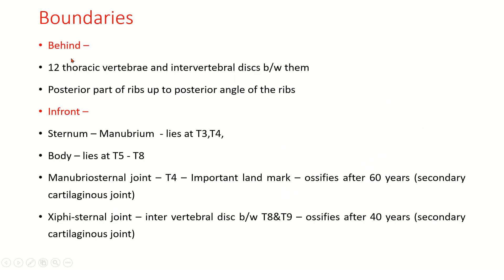The thorax is bounded behind by 12 thoracic vertebrae and intervertebral discs, and also by the posterior parts of the ribs up to their posterior angle. In front it is the sternum. The manubrium lies at the level of T3 and T4. The body of the sternum lies from T5 to T8. The manubriosternal joint is at T4 — an important landmark — and ossifies after 60 years; it is a secondary cartilaginous joint. The xiphisternal joint is at the level of the intervertebral disc between T8 and T9, ossifies after 40 years, and is also a secondary cartilaginous joint.